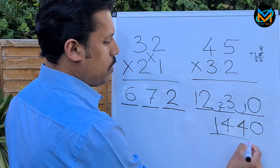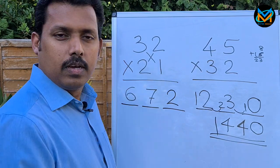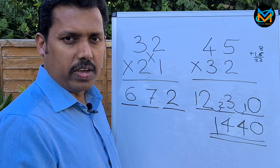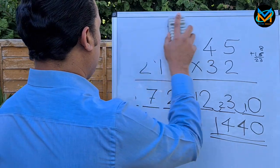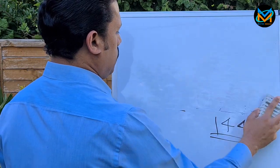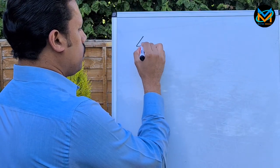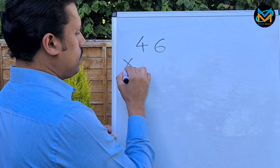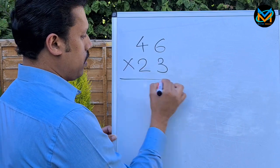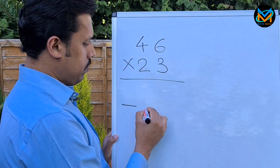So that's your answer. Let's see a few more examples. 46 times 23. Again, three digits.